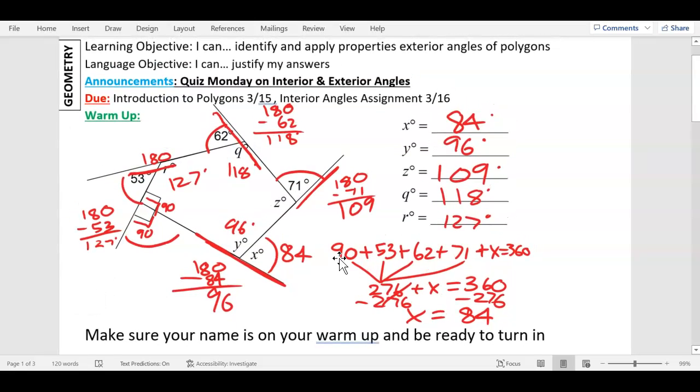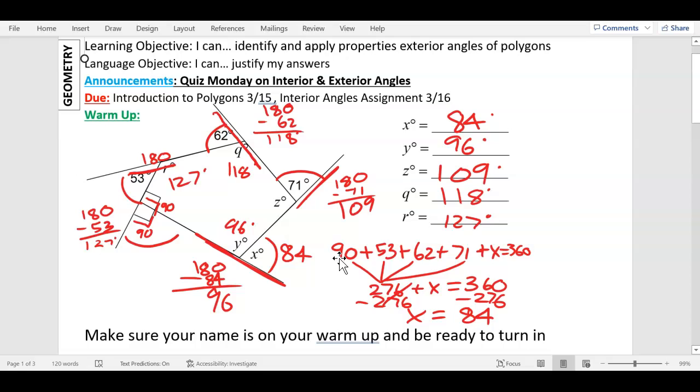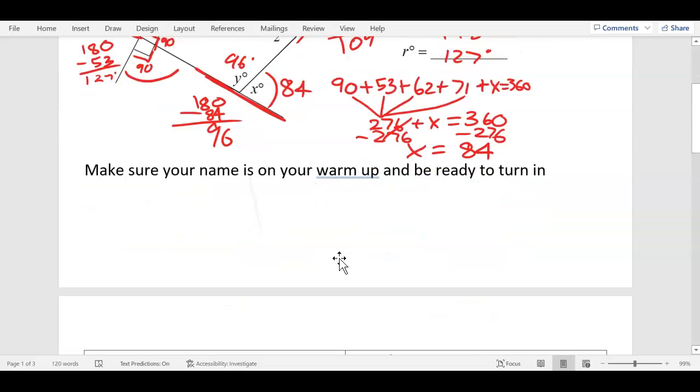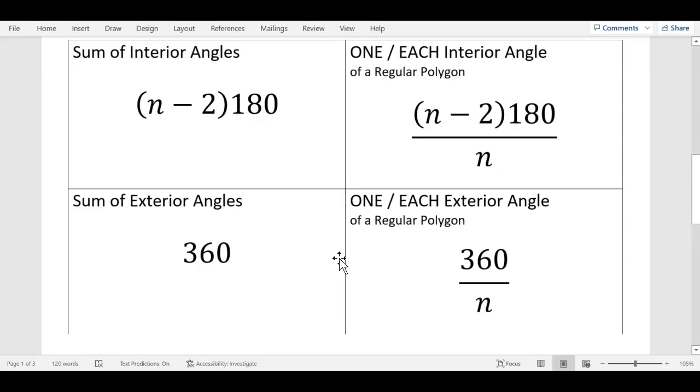Now you're going to have one of these on your assignment today. That's why I showed you this. So you're actually starting to think a little bit more critically on how to do these. You have one just like it, different numbers. And on the front side, you're going to be using all these formulas that we've been using before. So check it out.